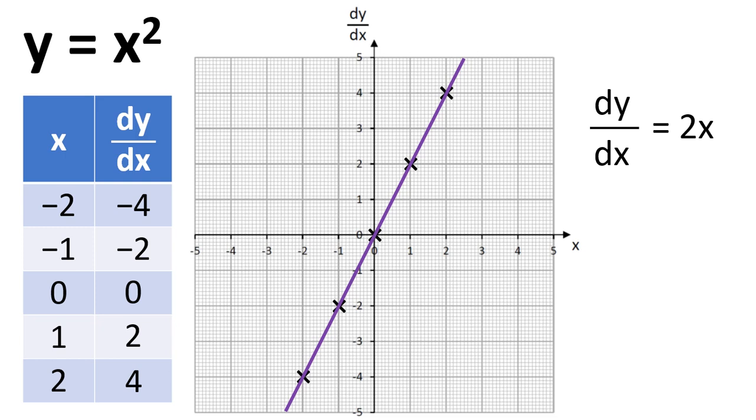So hopefully you can see that from the graph. It goes through the origin and we get a rise of two in y for every increase in x of one. So we've got a gradient there of two. So dy by dx equals two x.